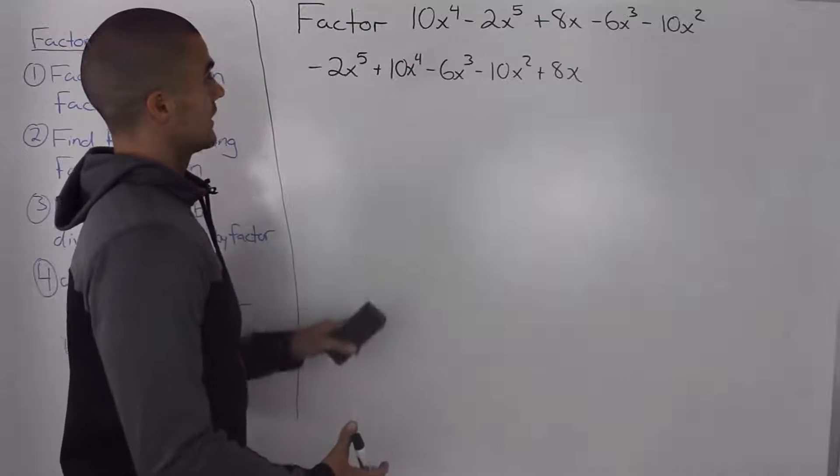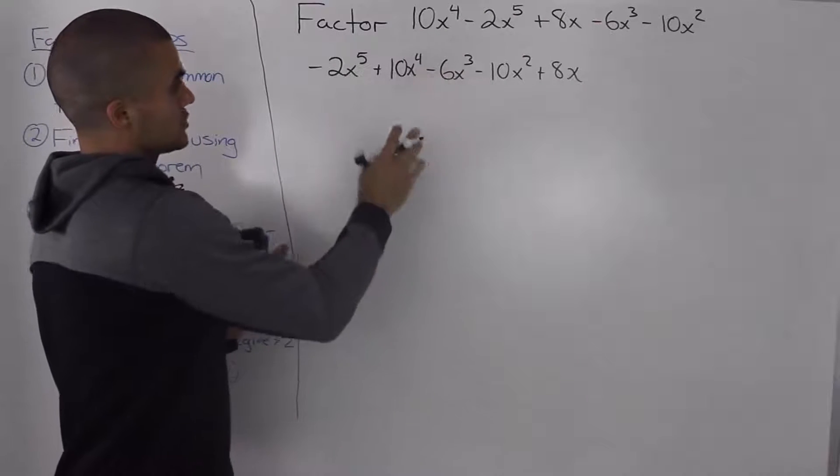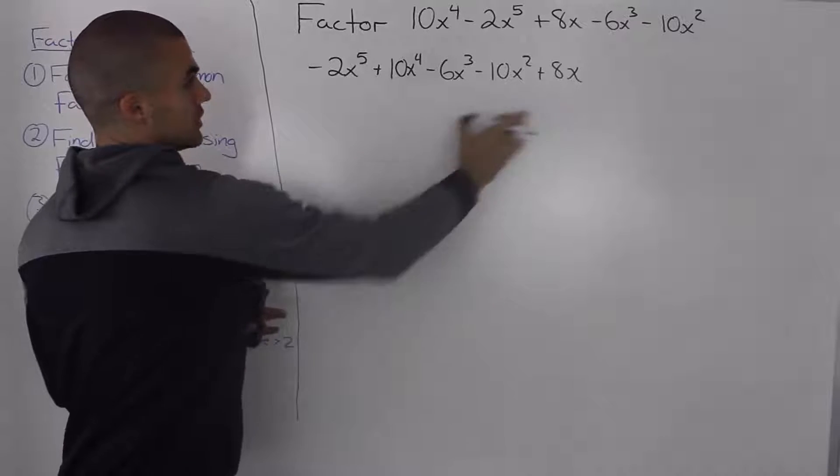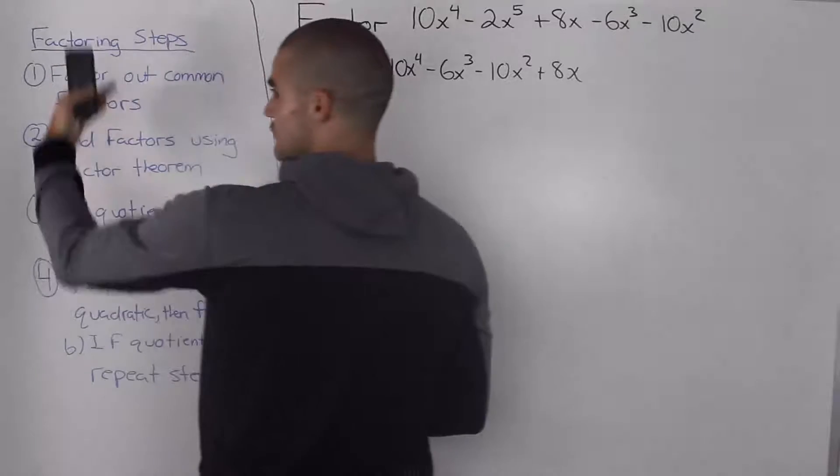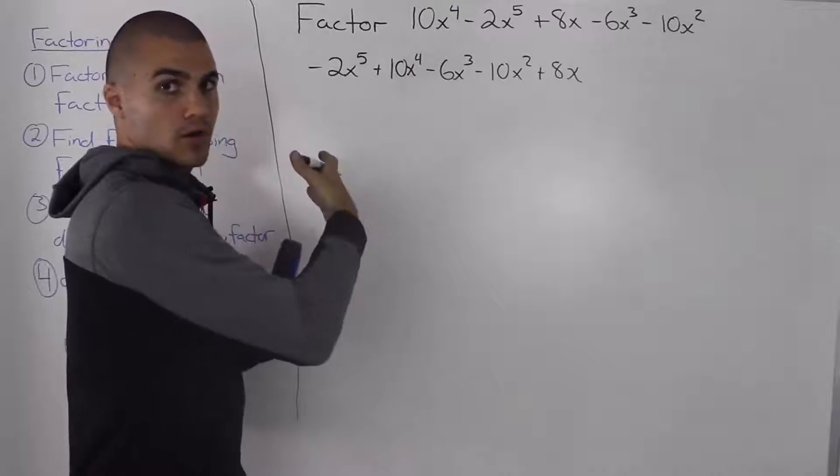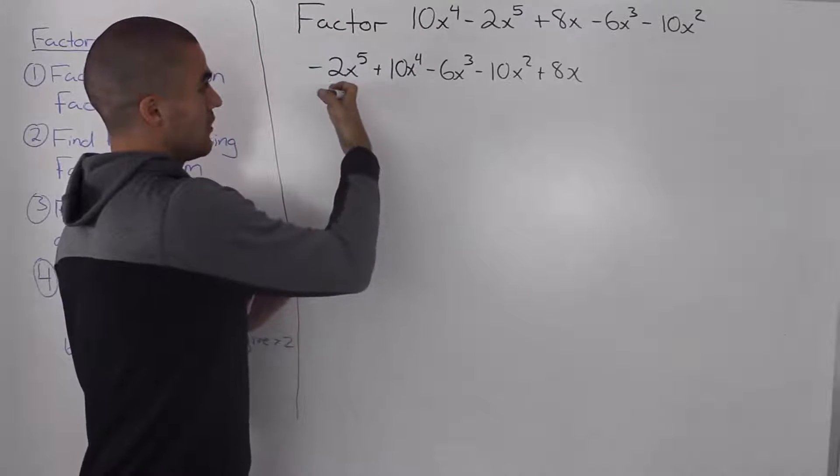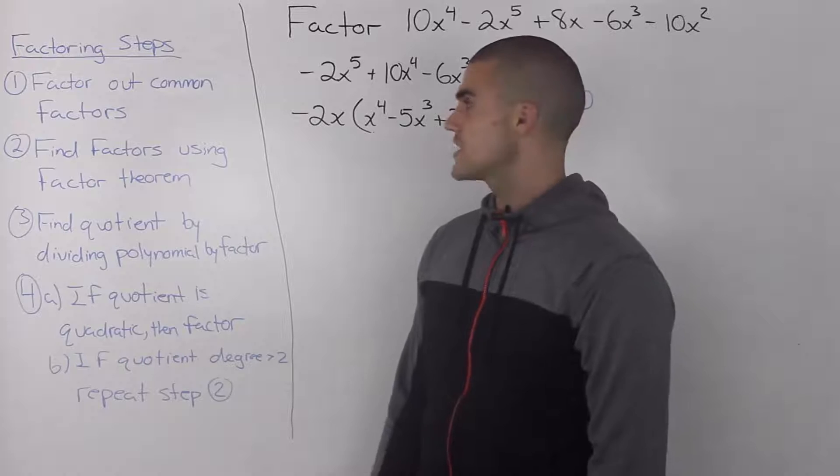So the very first thing that I did with this polynomial was I took it and I rearranged it from highest degree to lowest degree. And I actually didn't write that step out in the factoring steps, so you may want to add it in. Before doing all these steps, you want to always make sure that the polynomial is from highest degree to lowest degree.